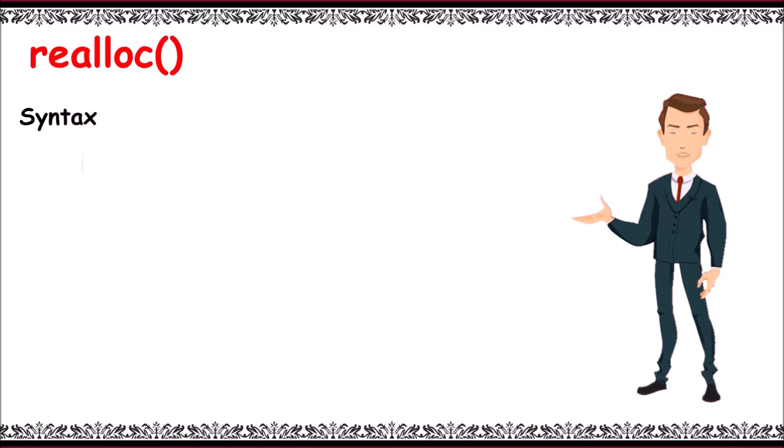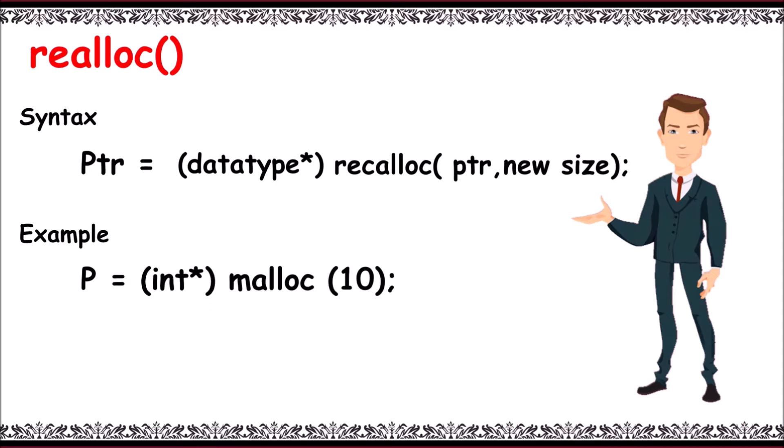The syntax is pointer equals data type realloc pointer variable comma new size. For example, first allocate using malloc or calloc, then change it by p equals int realloc of p comma 20. So 20 will be the new size.